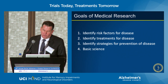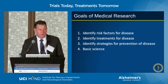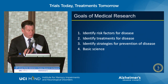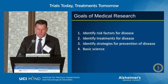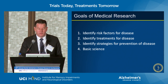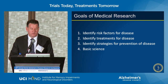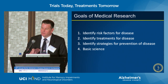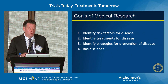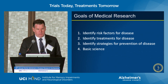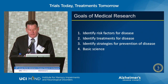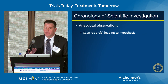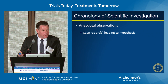When I think about the goals of medical research, I think of four very broad areas — and they clearly interlink. Our goals generally are to identify risk factors for disease, to identify treatments for disease, to identify strategies for prevention of disease, and basic science. Basic science allows us to make inroads on all of these aspects as we move through from the lab and animal model studies. I like to think about the role of trials in the context of the chronology of scientific investigation in medical studies.